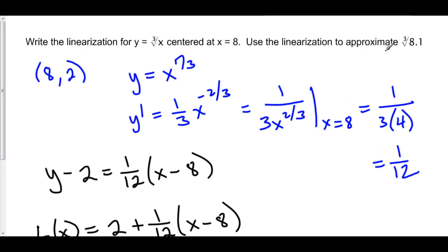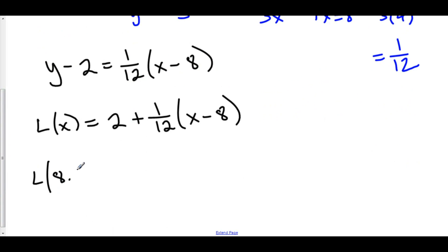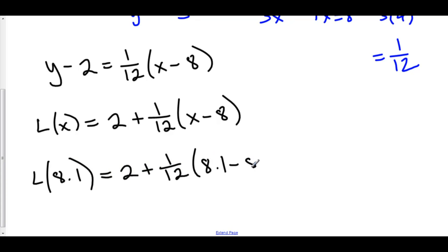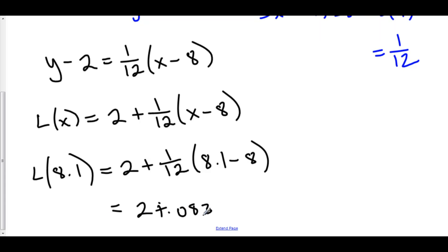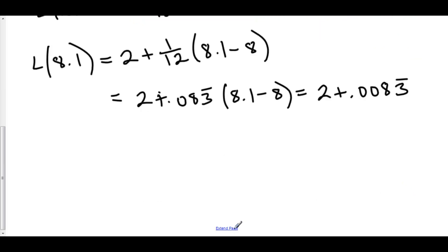We want to find the approximation of the cube root of 8.1, so let's plug 8.1 into our linearization. L of 8.1 is equal to 2 plus 1 over 12 times 8.1 minus 8. Now 1 over 12 is 0.083 repeating, times 0.1, which is 0.0083 repeating. So we are approximating this by 2.00833, and this is our estimation for the cube root of 8.1.